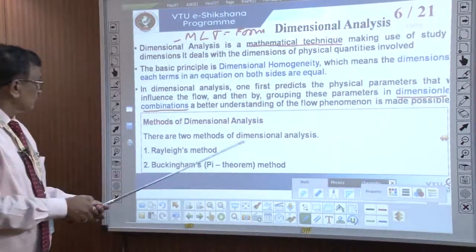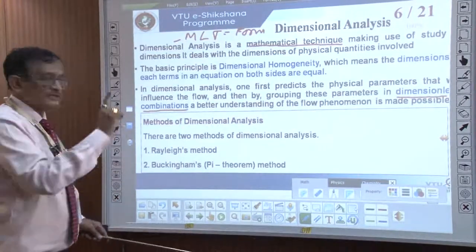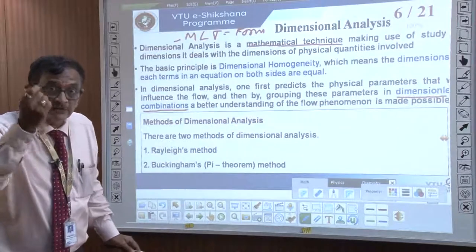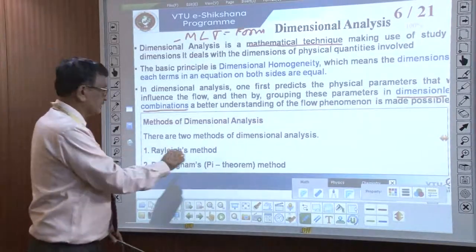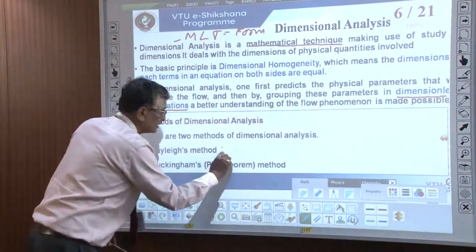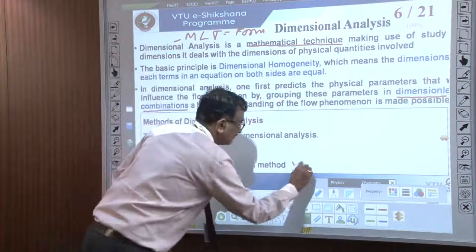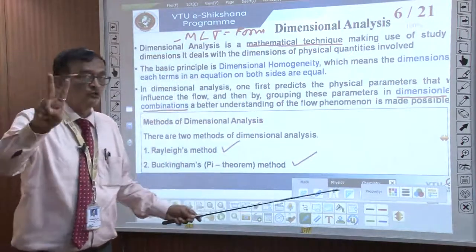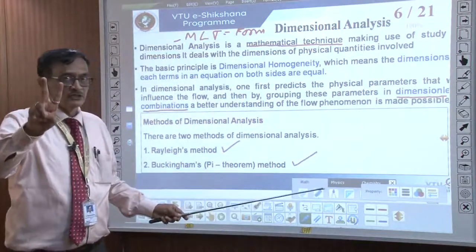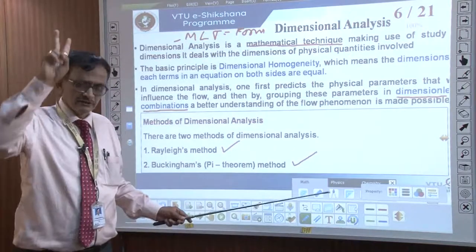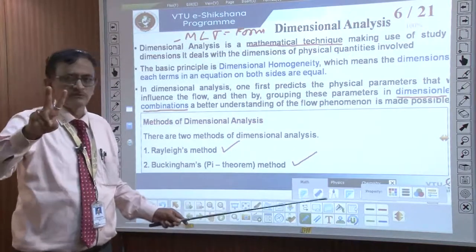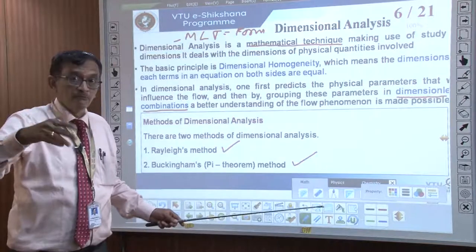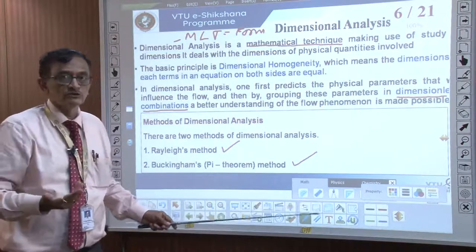There are two methods of dimensional analysis. One is the Rayleigh method, a very old method from around the eighteenth century, and the other is the Buckingham pi method, which is the modern method we normally use.